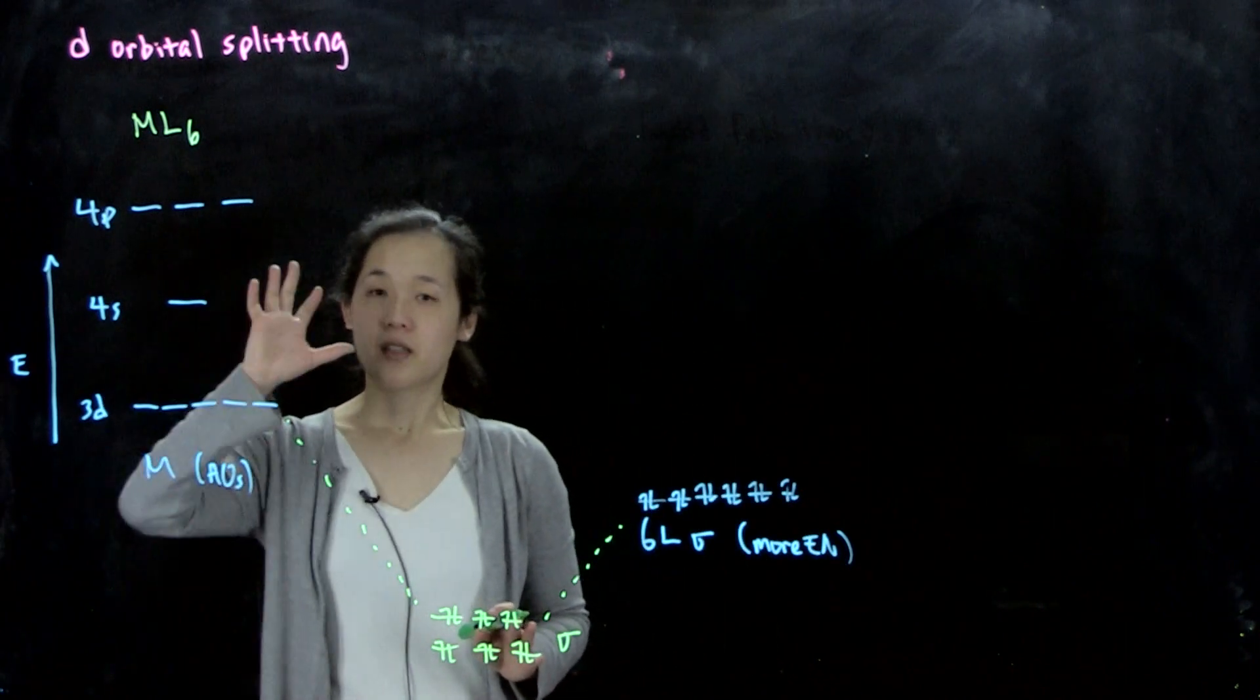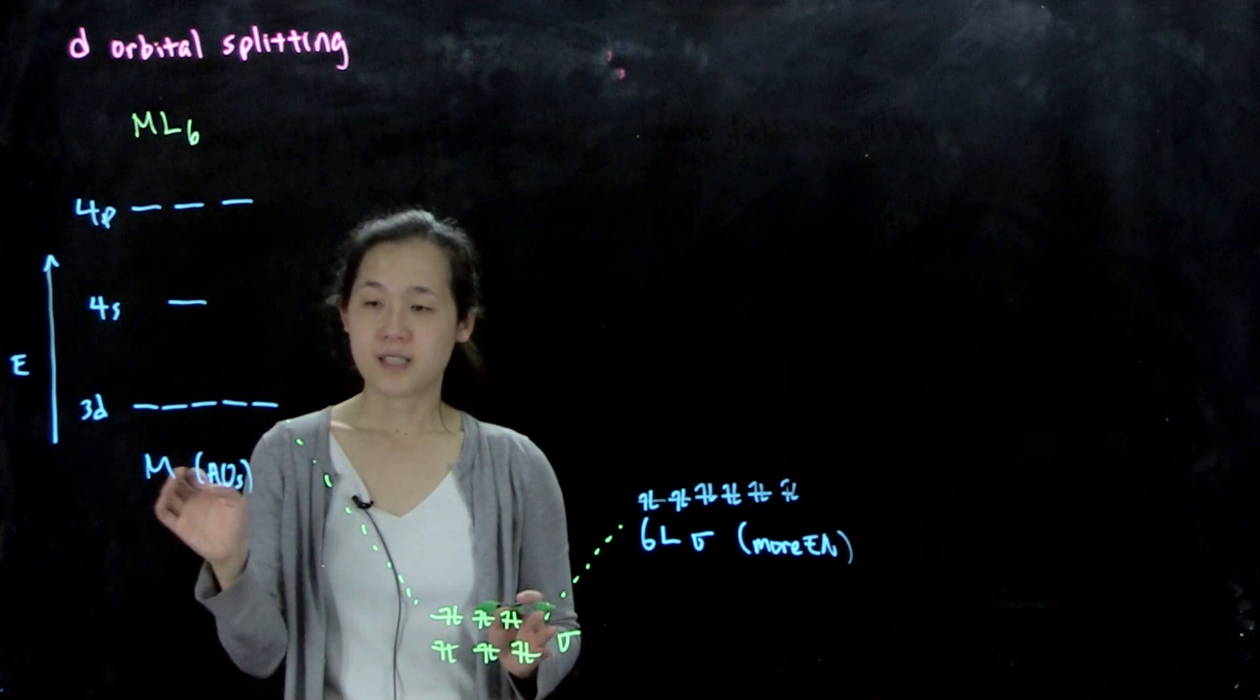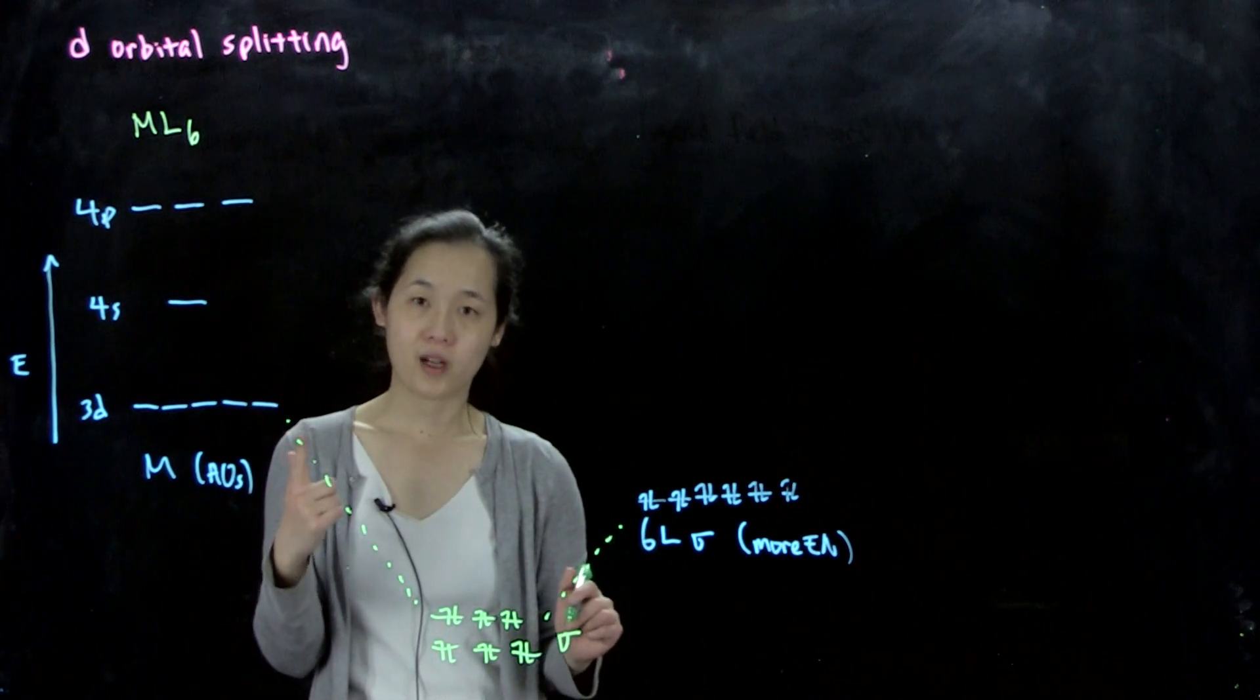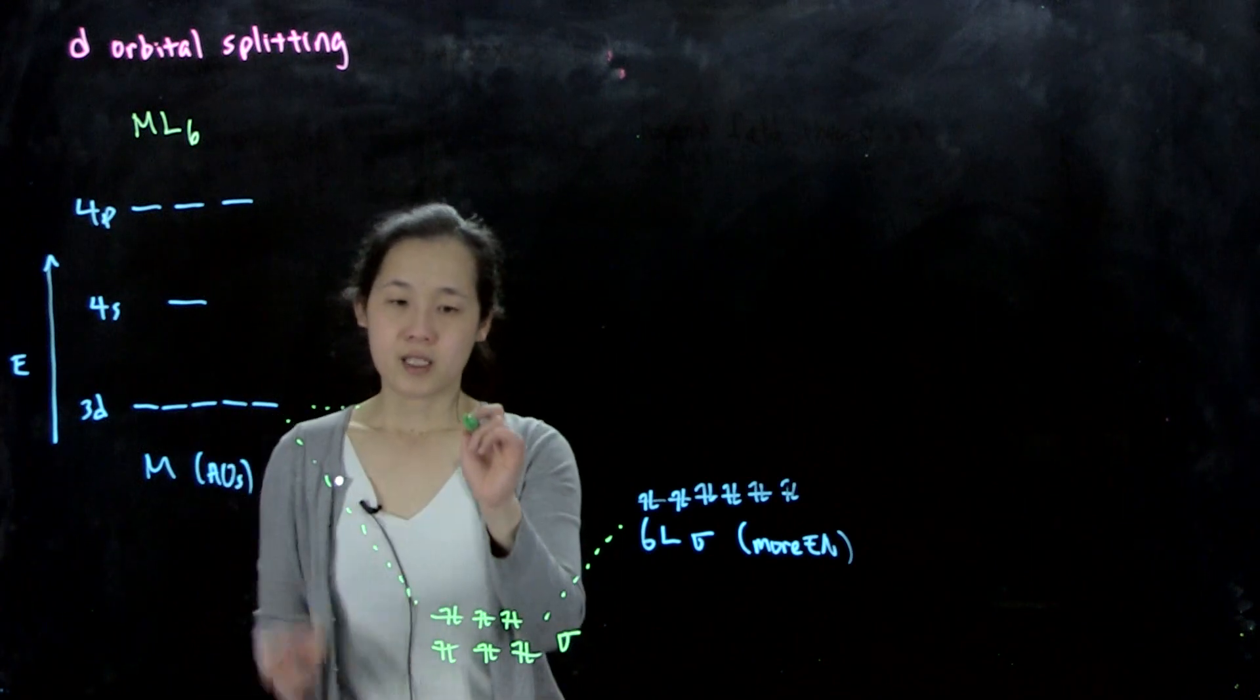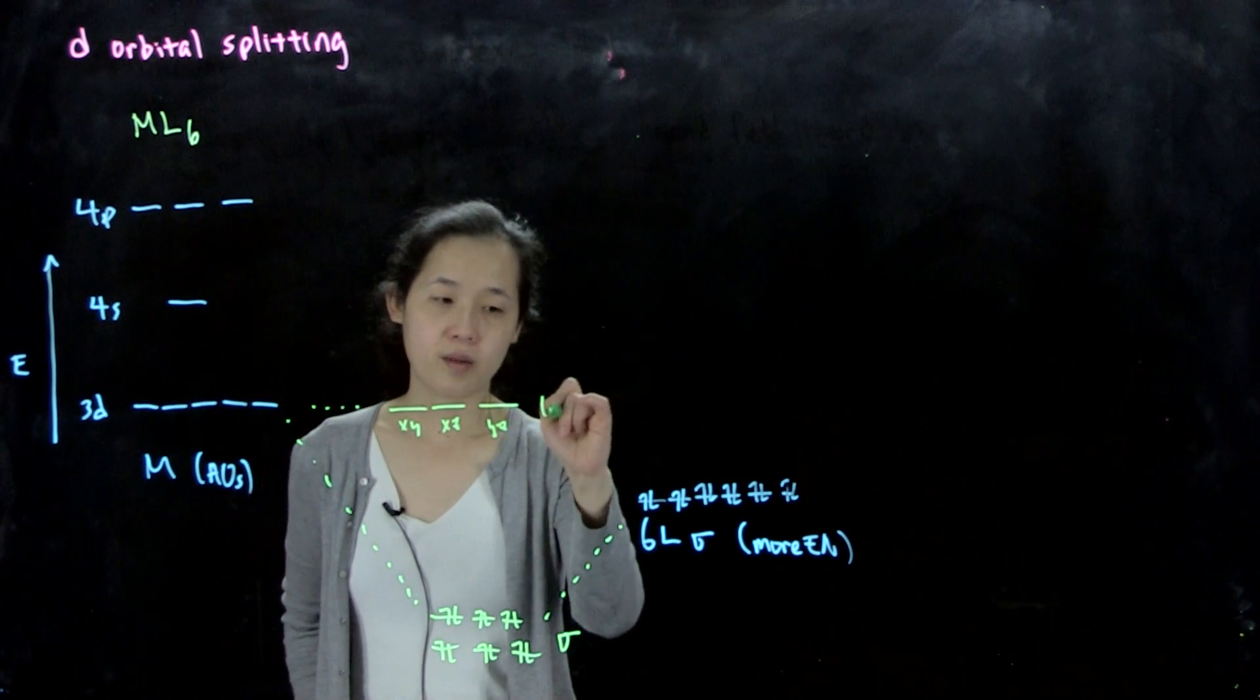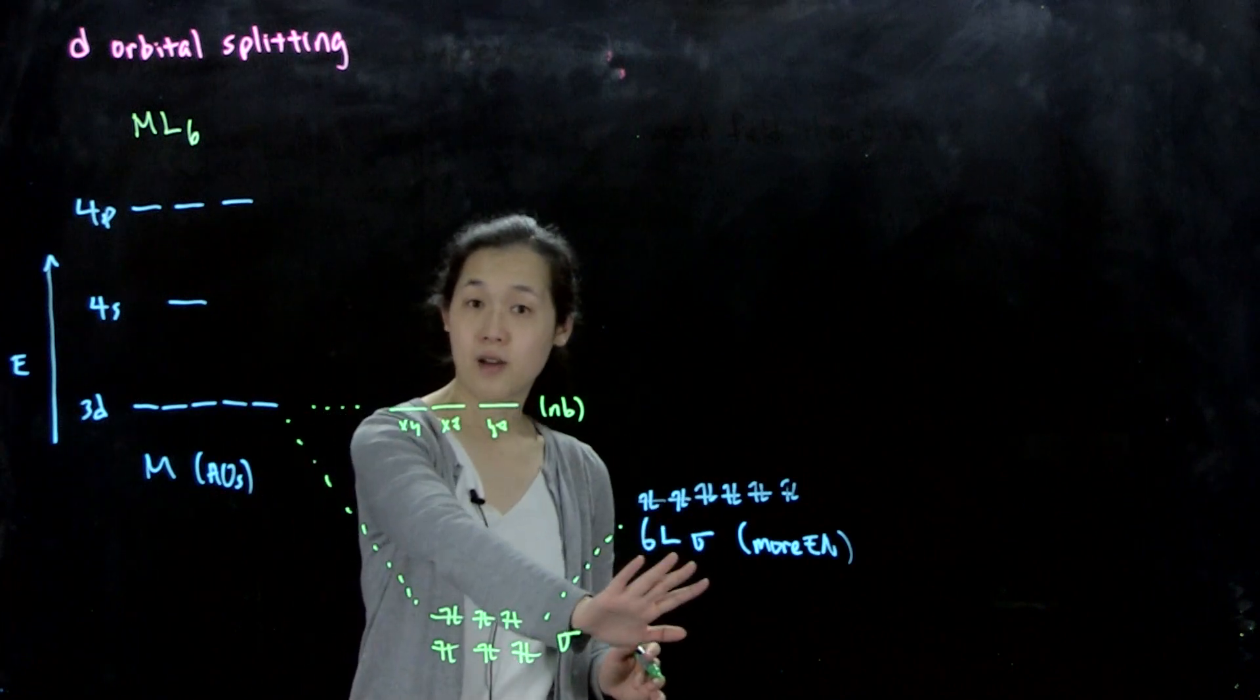What's important is the d-orbital splitting. As we form these bonding combinations, we also form antibonding orbitals. The only d-orbitals that our ligand sphere can interact with are our dx squared minus y squared and our dz squared. As a result, our three d-orbitals over here, xy, xz, yz, are all non-bonding. They do not change in energy from the original d-orbital energy because ligands can't interact with them.